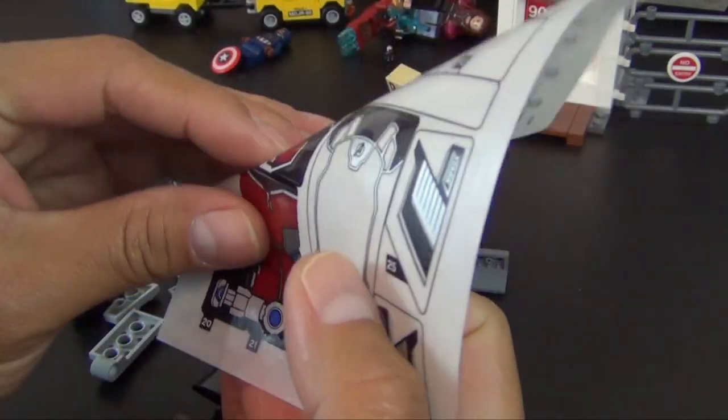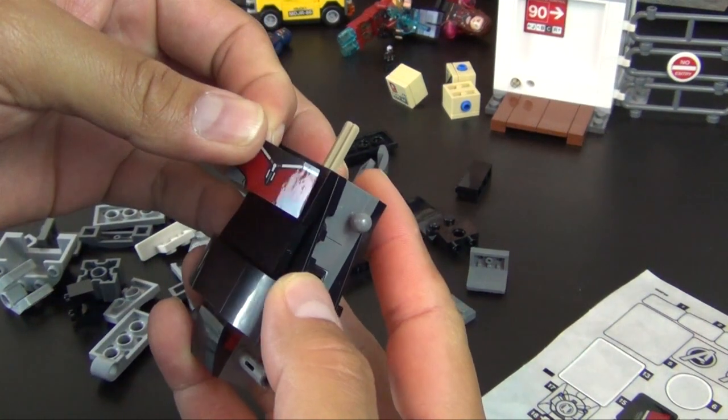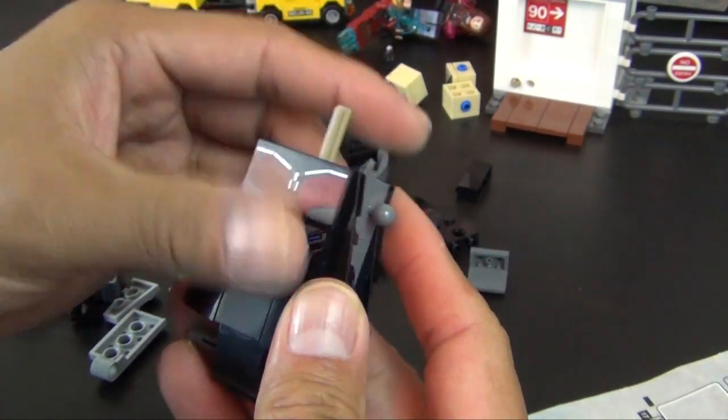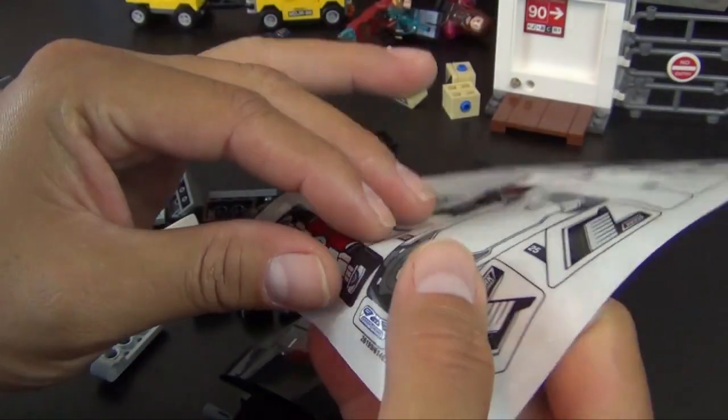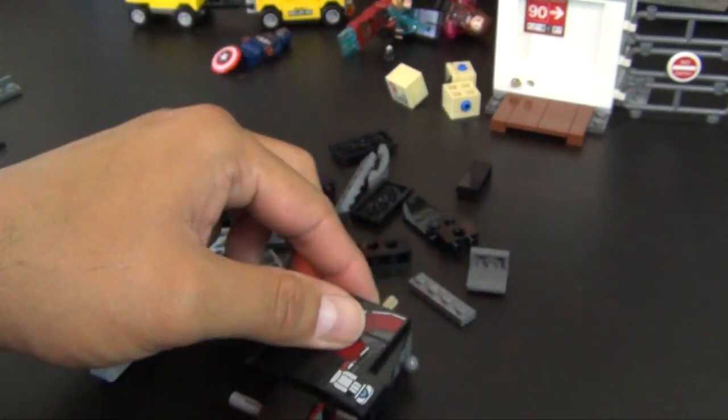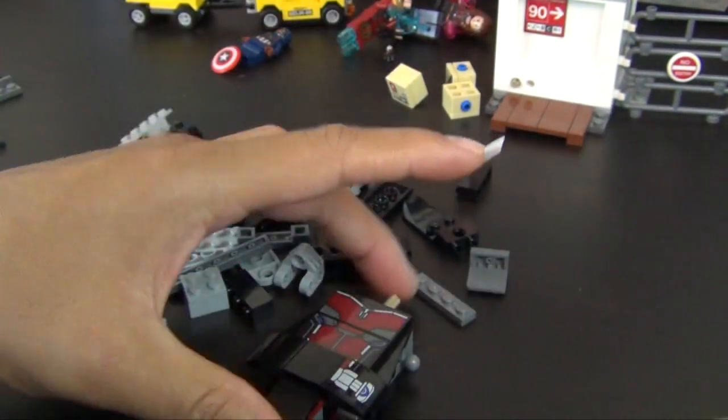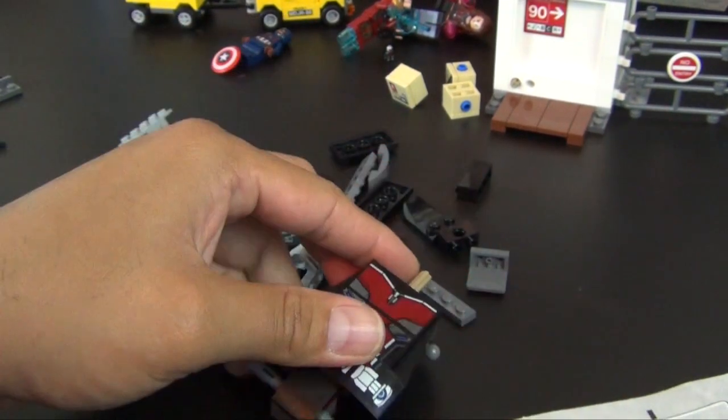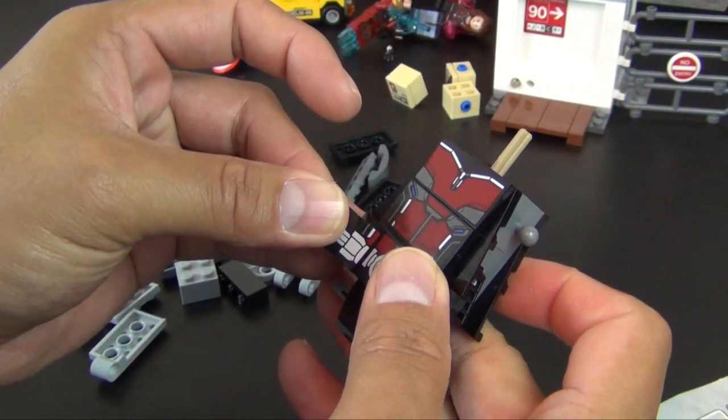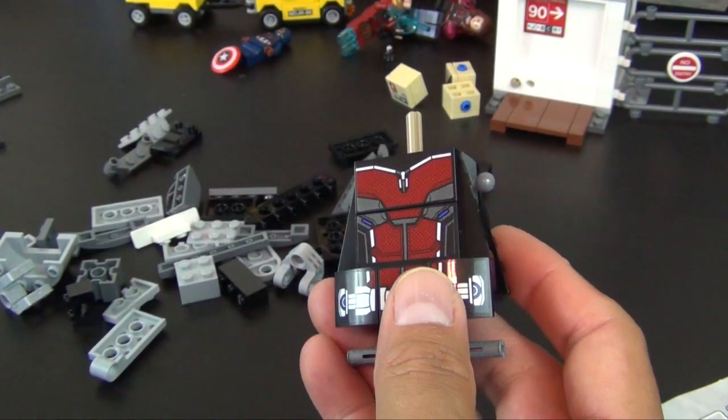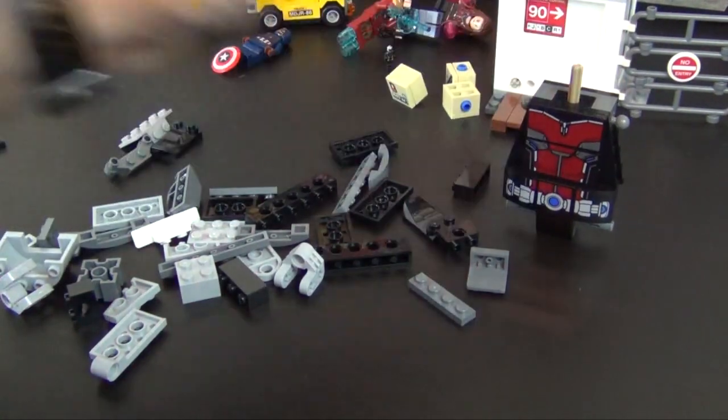And we have two of these technic pieces, those are going to be the joints for the legs. Sticker time, start with sticker number 18, sticker number 19, sticker 22, sticker 20. Now you can really see the shape of it coming together. Put that piece off to the side.